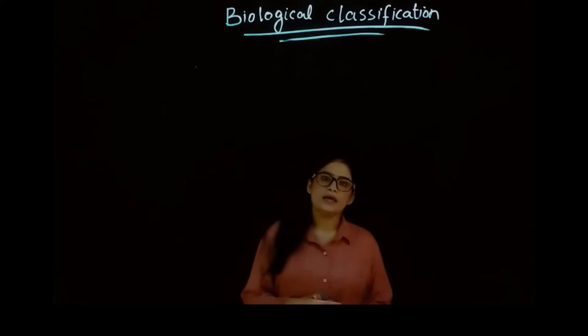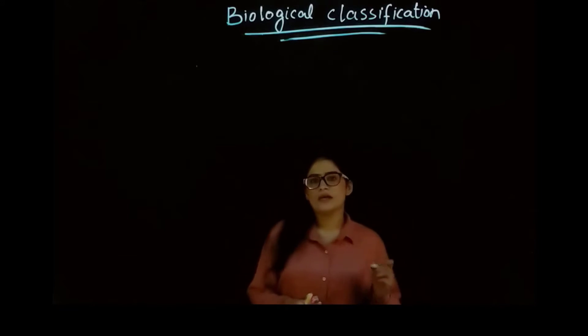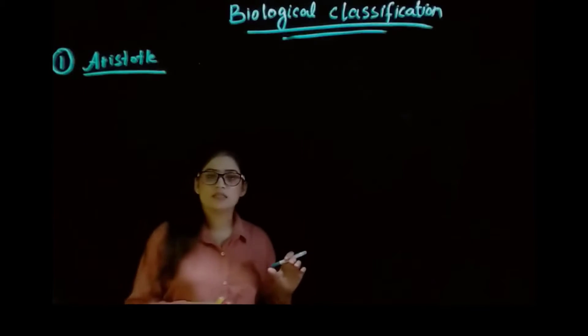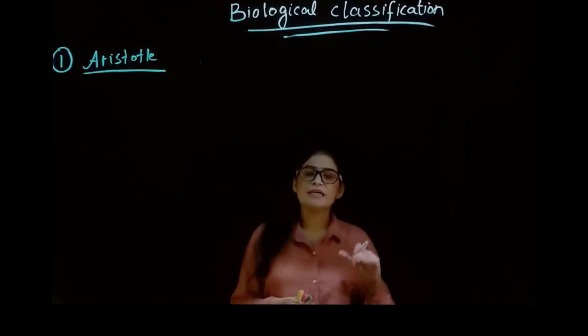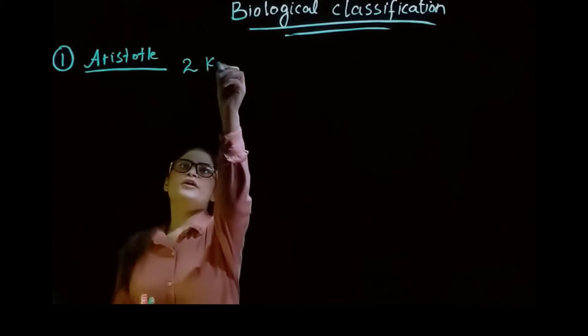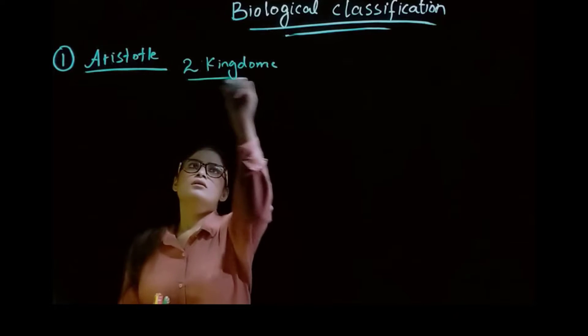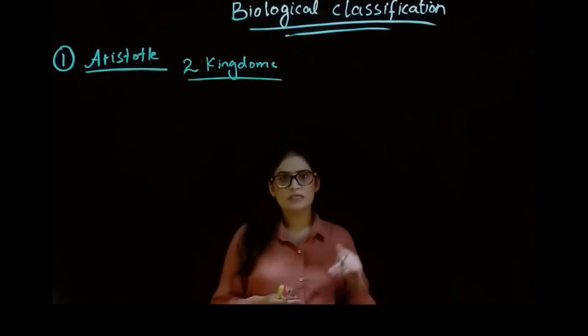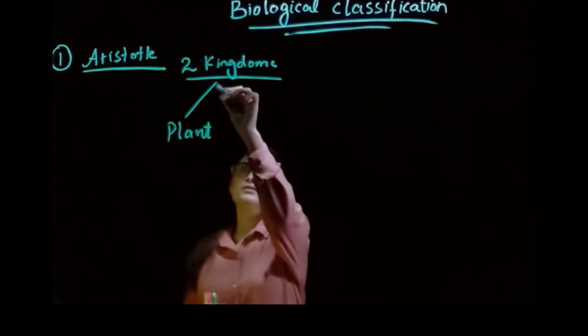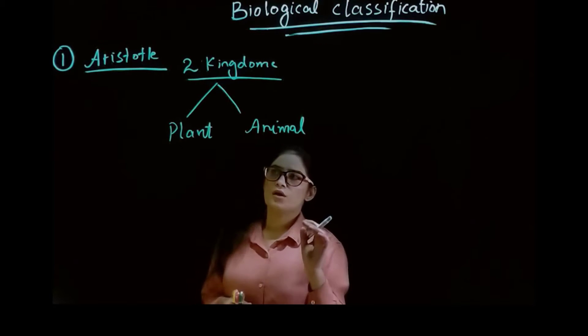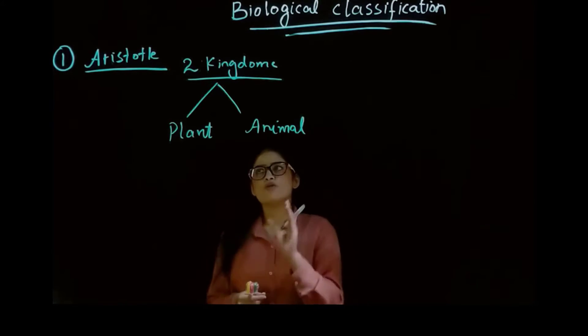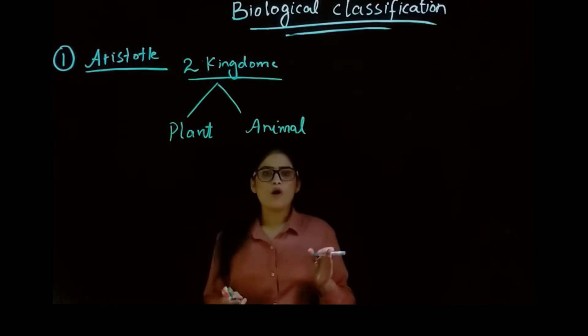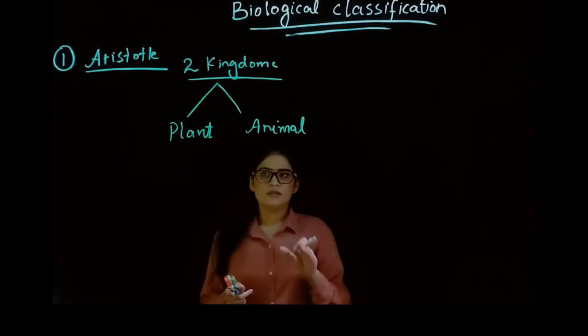The first scientist we have is Aristotle. Aristotle is also known as the father of biology. According to him, he gave the idea of the two kingdom system. According to Aristotle, all the living organisms present on the earth are divided into two kingdoms: kingdom Plantae and kingdom Animalia.